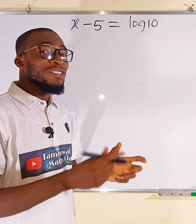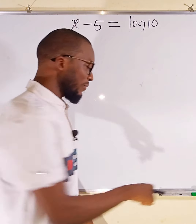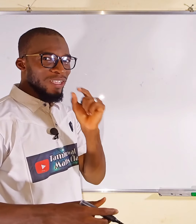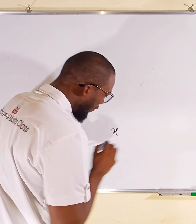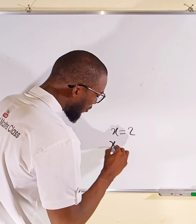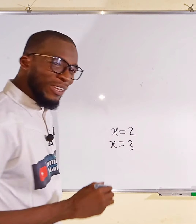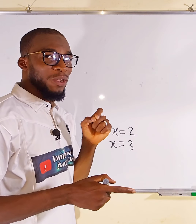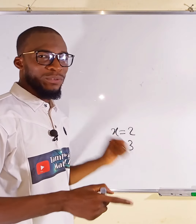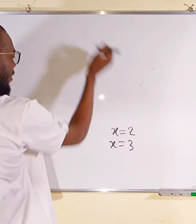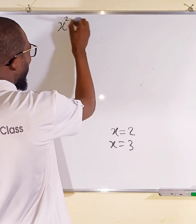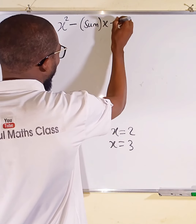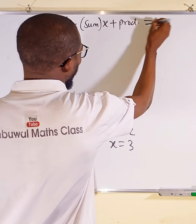So now let me show you how some teachers form quadratic equations. For quadratic equations, normally in the end we're going to get two values. So let the first one be equal to 2 and the second one be equal to 3. A teacher will use these two values and reverse them back to form that quadratic equation. The formula he normally uses is: x squared minus the sum of these roots, multiplied by x, plus their product, equals 0.